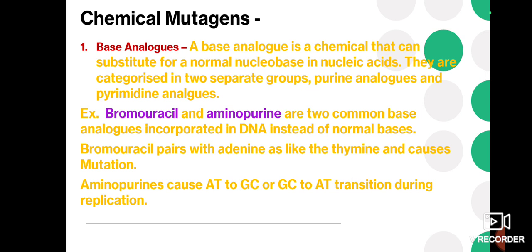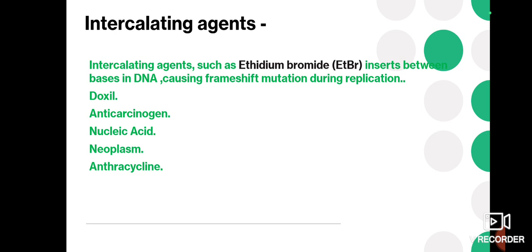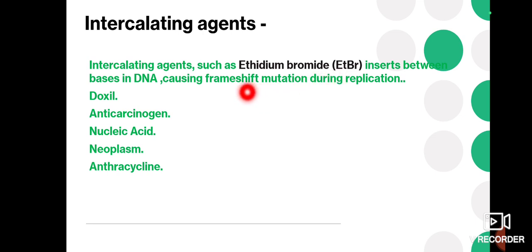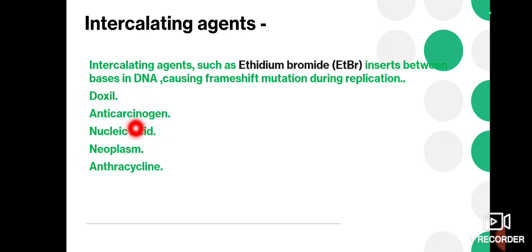Next are intercalating agents. For example, ethidium bromide inserts between bases in DNA, causing frameshift mutations during replication. Intercalating agents are responsible for frameshift mutations, meaning addition and deletion of bases from DNA. Other examples of intercalating agents include doxorubicin, anti-carcinogen nucleic acid neoplasm agents, and anthracyclines.